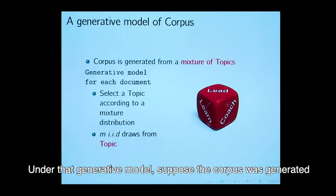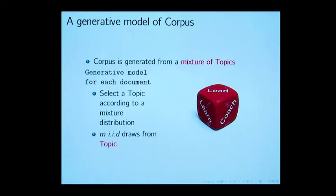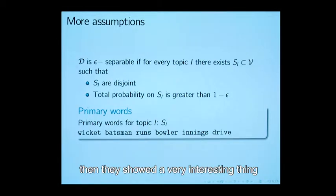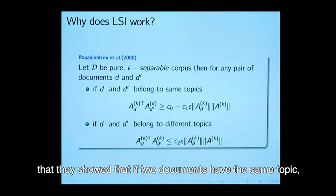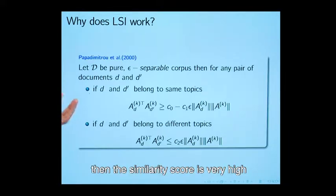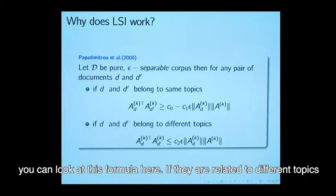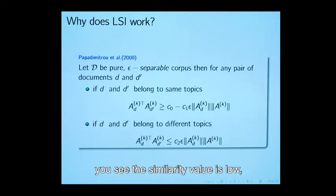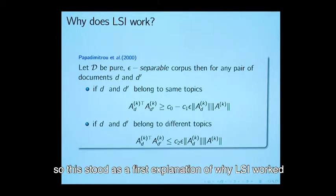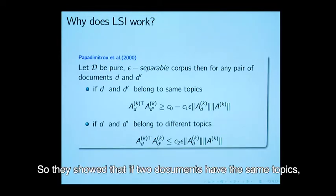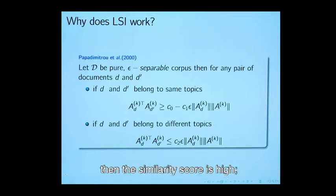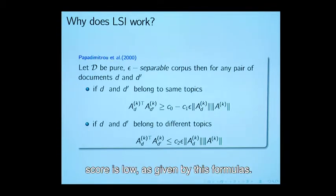Under that generative model, suppose the corpus was generated, then they showed this very interesting thing. If two documents have the same topic, then the similarity score is very high, you can look at this formula here. If they are related to different topics, you see the similarity value is low. This stood as the first explanation of why LSI worked and because of this, this idea of topic came into being.